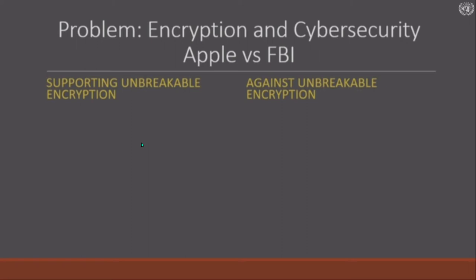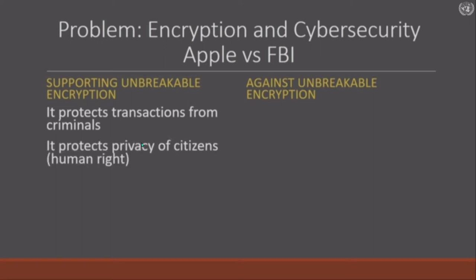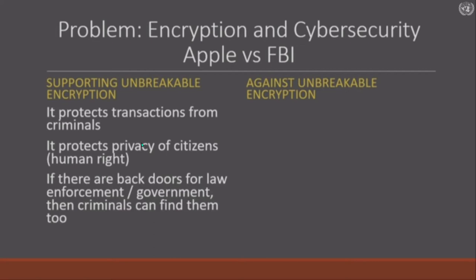On the technology company side, supporting unbreakable encryption — that's the Apple side. Unbreakable encryption means you can keep your messages so secret that nobody can get in. It's important because it protects your banking transactions from criminals, and it can also protect the privacy of citizens, whistleblowers, and dissidents — it's a human rights question. It is always said by the technical community that if there are back doors — a secret way in for law enforcement or government — then criminals can get that back door too. And some will also say that in some countries, the law enforcement and the government are the criminals.